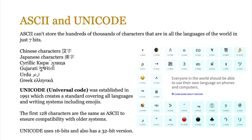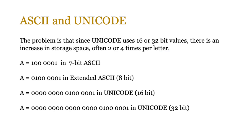The first 128 characters of Unicode are the same as ASCII to ensure compatibility with older systems. However, Unicode uses 16 bits, and there's also a 32-bit version. The problem is that since it uses 16 or 32-bit values, there's an increase in storage space — often two or four times per letter. For example, A in 7-bit ASCII is 1000001. In extended ASCII it's 8-bit: 01000001. In Unicode, the same A becomes 16 bits, and in 32-bit it's even larger.